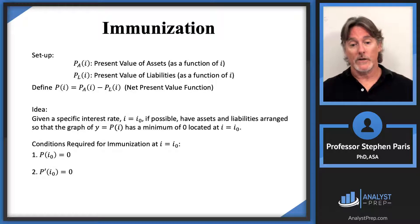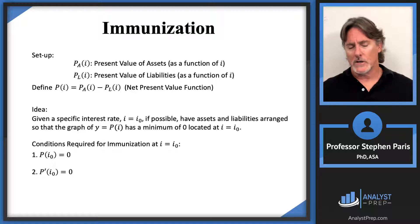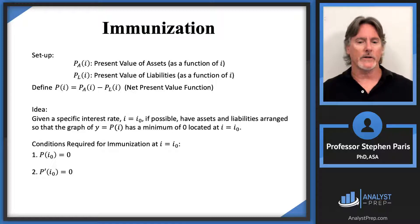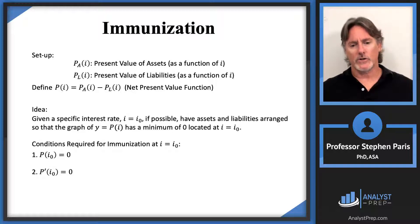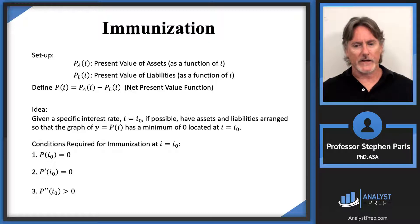Just having a critical value alone doesn't mean you have a minimum — from calculus, a critical value could be a minimum, a maximum, or even an inflection point. So in order to ensure that you have a minimum, you use the second derivative test: you want the graph to be concave up, and concave up means you want the second derivative to be positive. So at I-naught, the second derivative must be greater than zero. Those are the three conditions required for immunization.